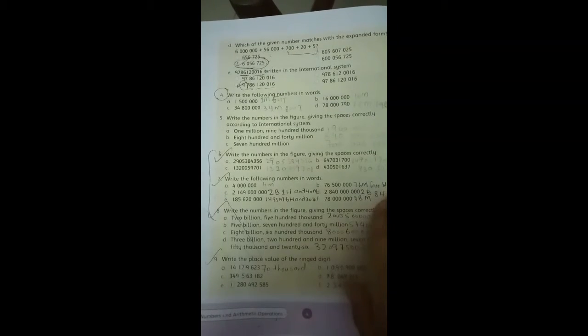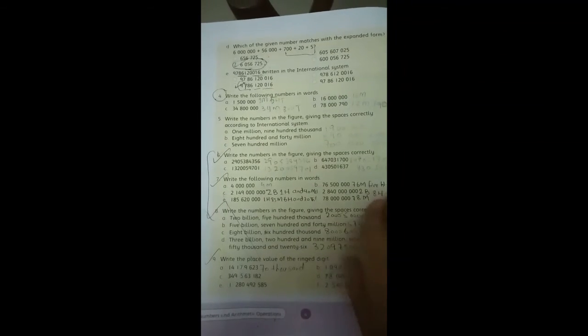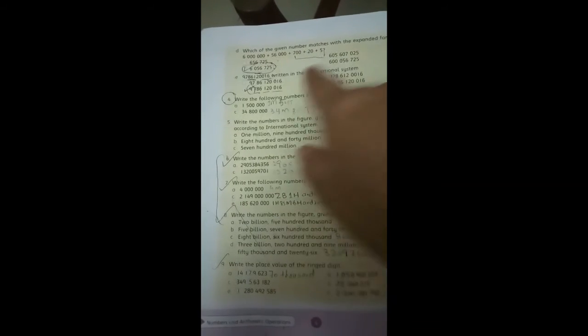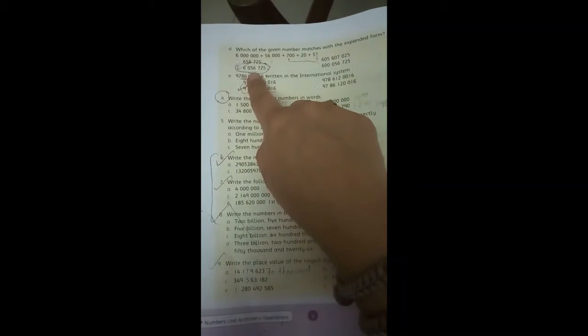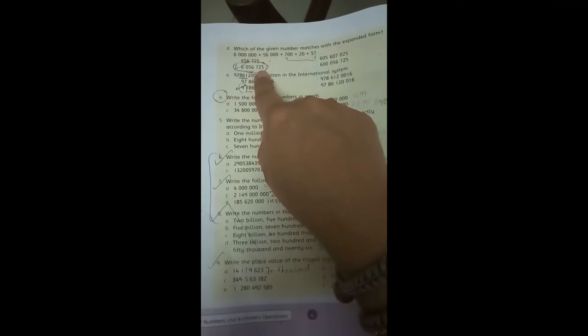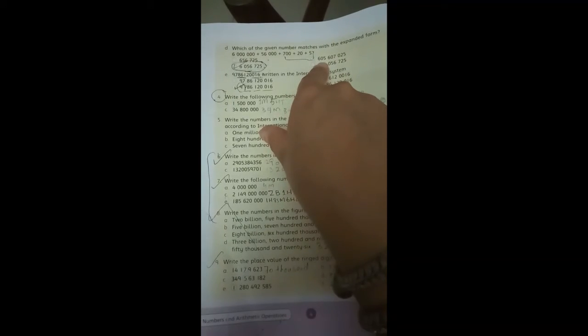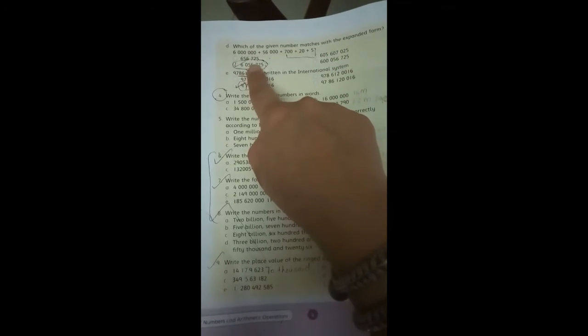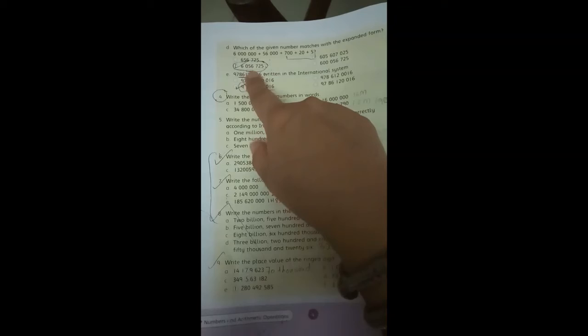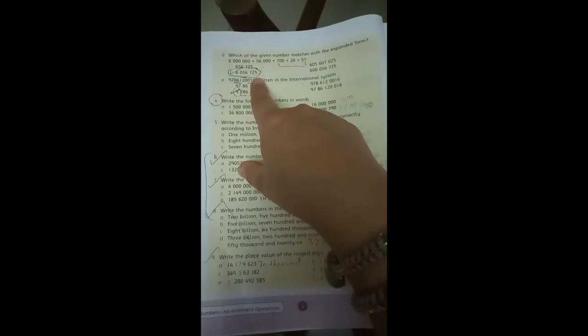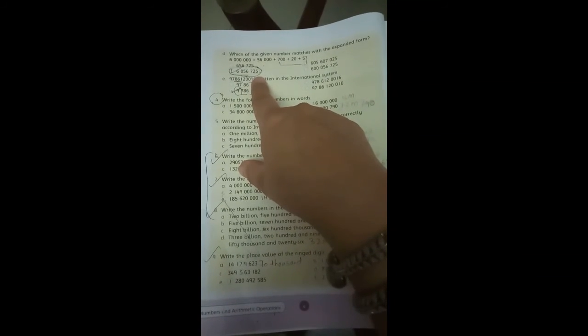If you follow the international system, then you will see where 6 million is. You have here 6 million, then 600,000, then 50,000, then 6,000. So you will write the right option. You have the third option and you have circled the third option.